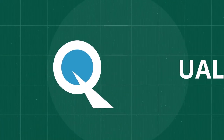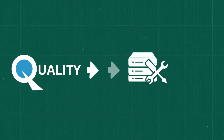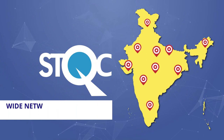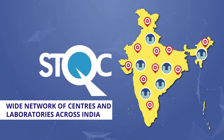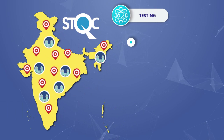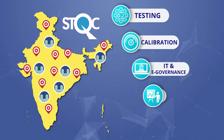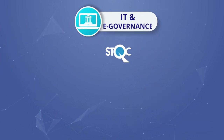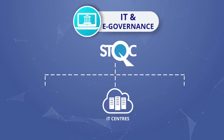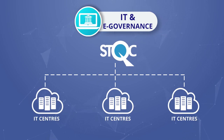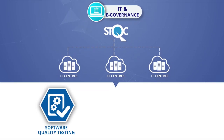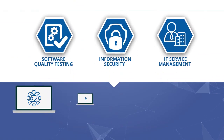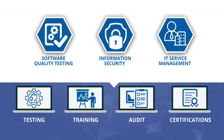STQC has been assuring quality of both hardware and software reliably for the government for many years. STQC has a wide network of centers and laboratories across India to provide services like testing, calibration, IT and e-governance, training and certification to public and private organizations. In the area of IT and e-governance, STQC provides assurance services through its IT centers for software quality testing, information security and IT service management by conducting testing, training, audit and certifications.